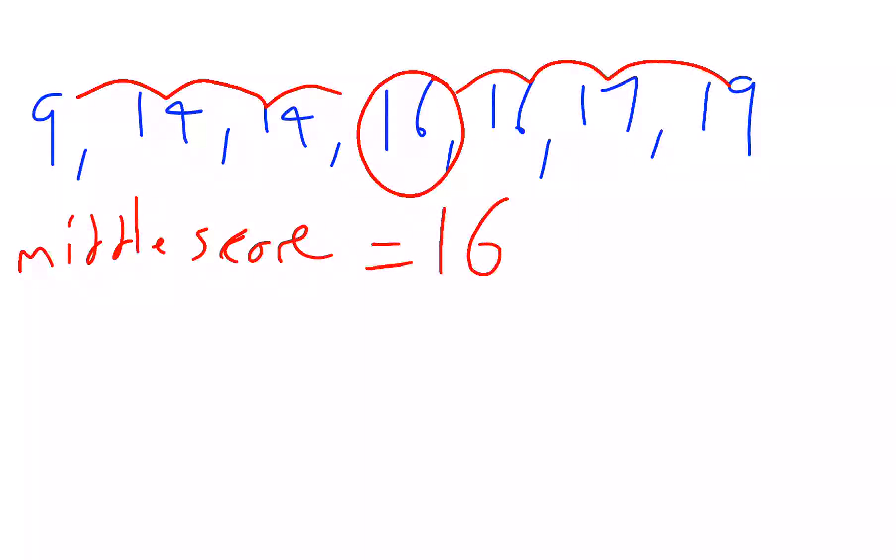If we had two numbers in the middle because we had an even number of scores, we'd find the average of those two numbers.